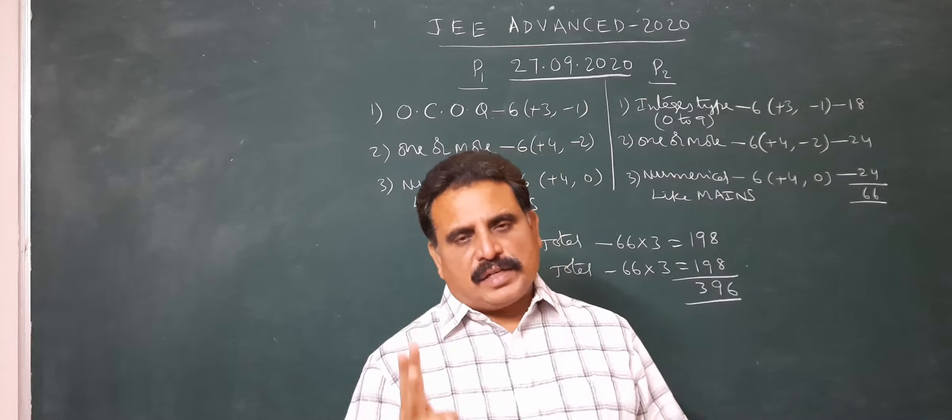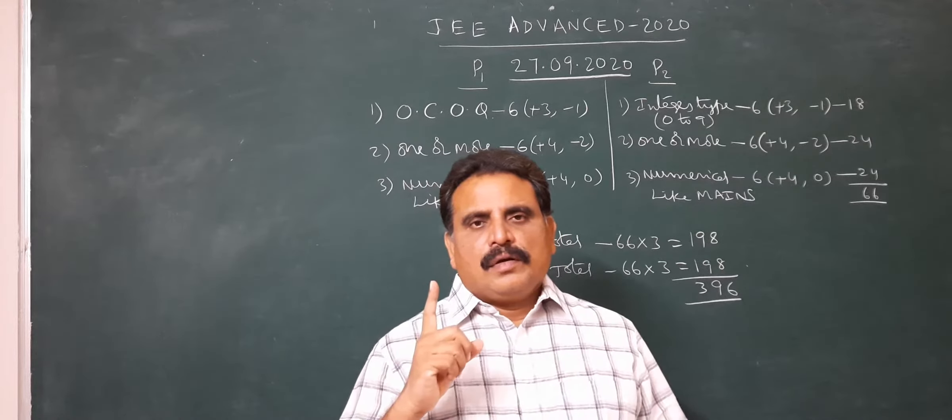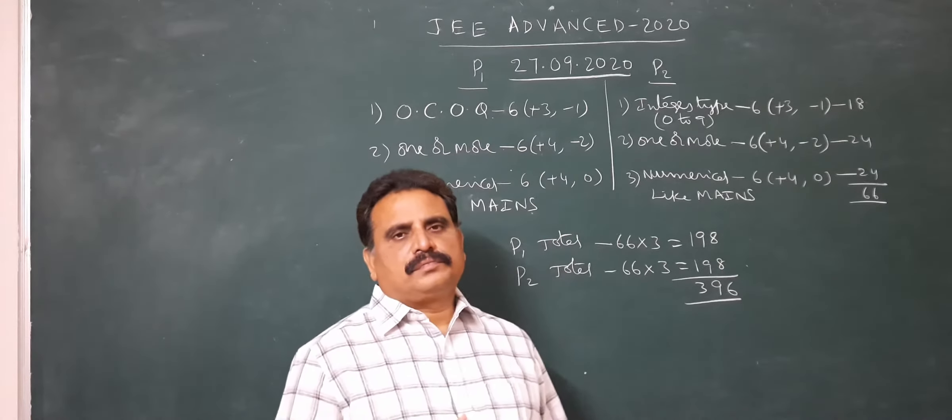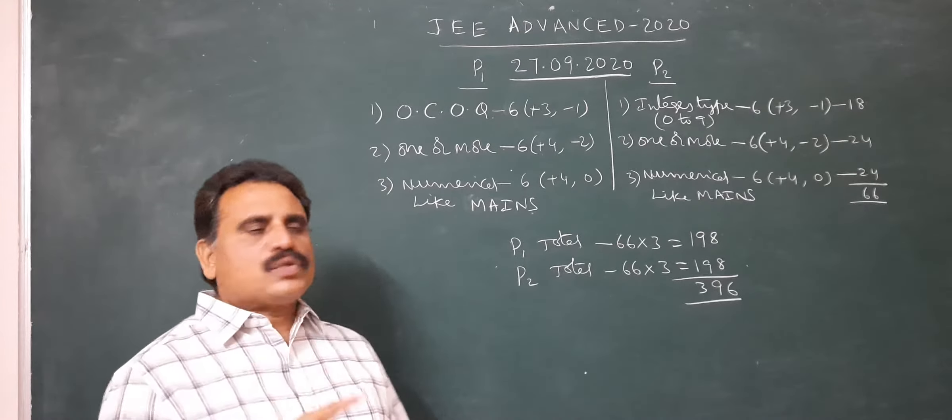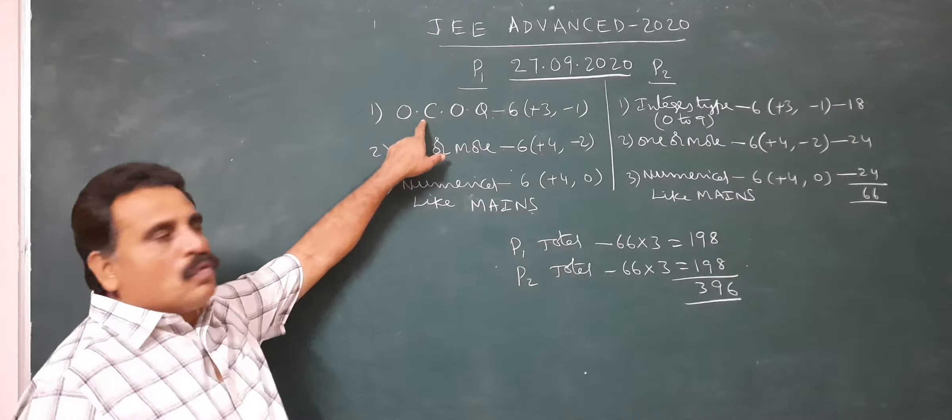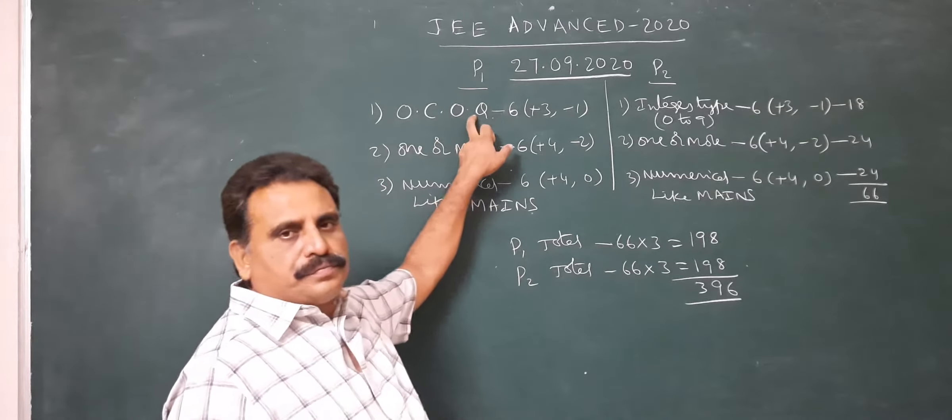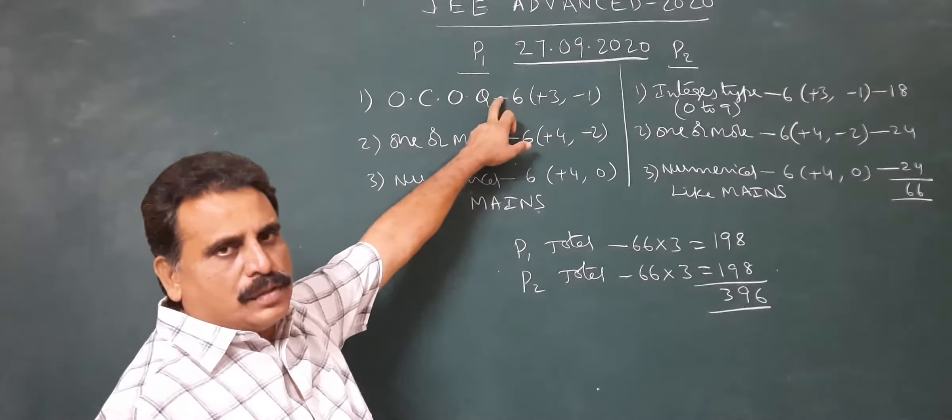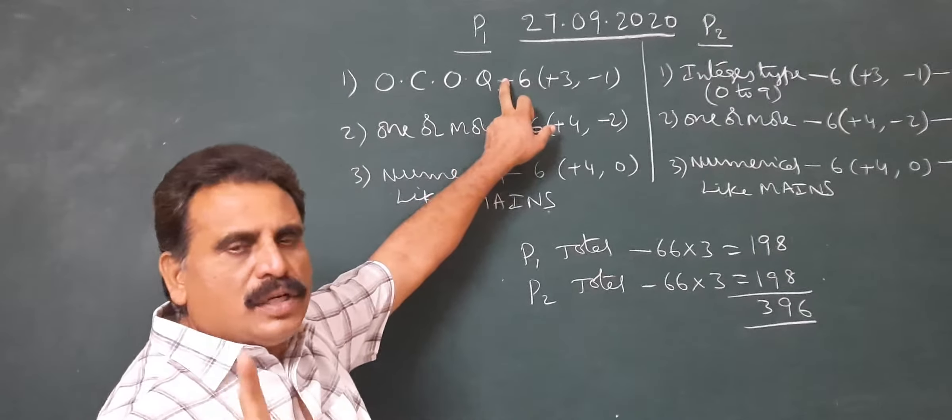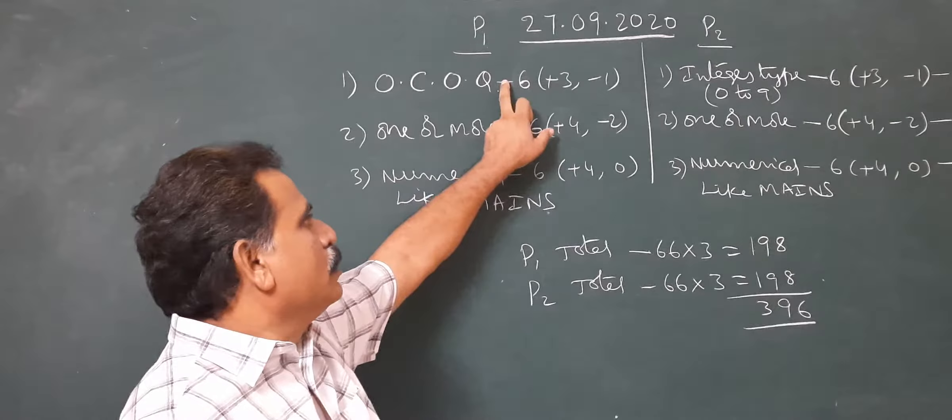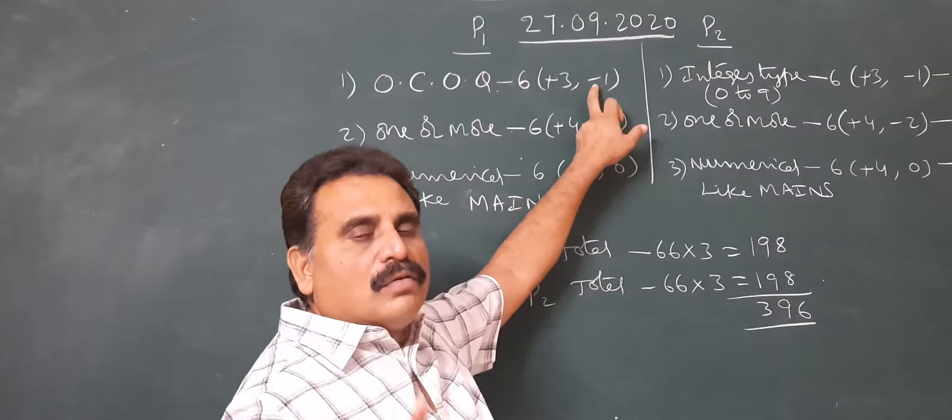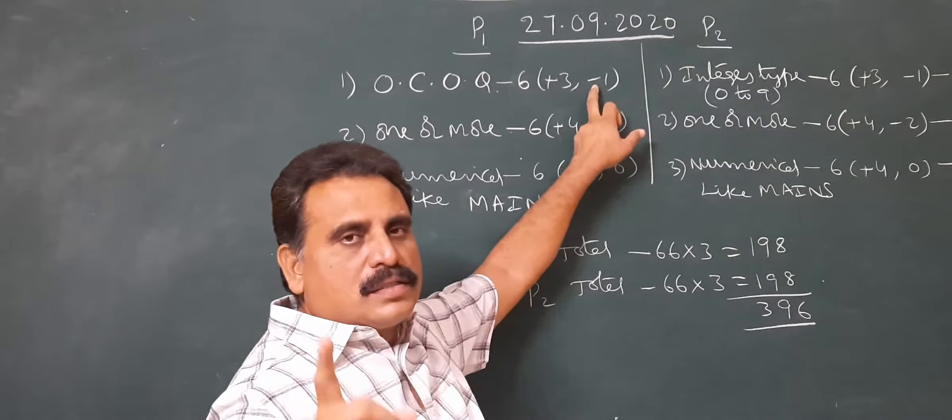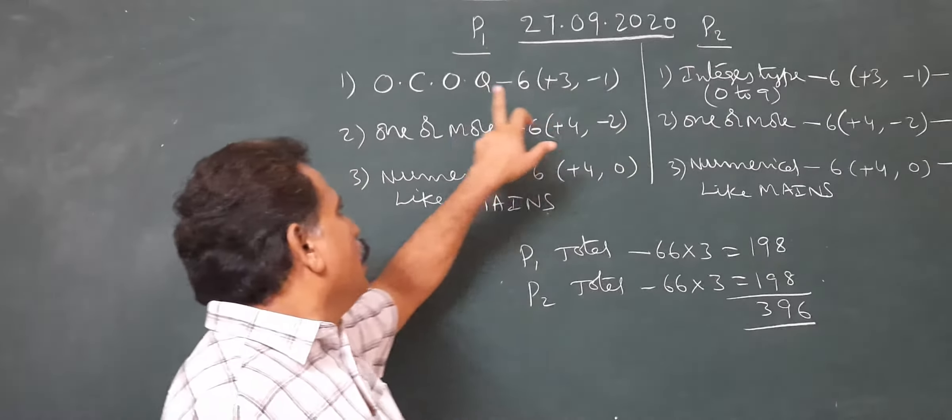Paper 1 contains three sections. First section contains six questions - one correct option questions. Each question carries three marks if it is correct, and if it is wrong, minus one mark. If you have not answered, zero.